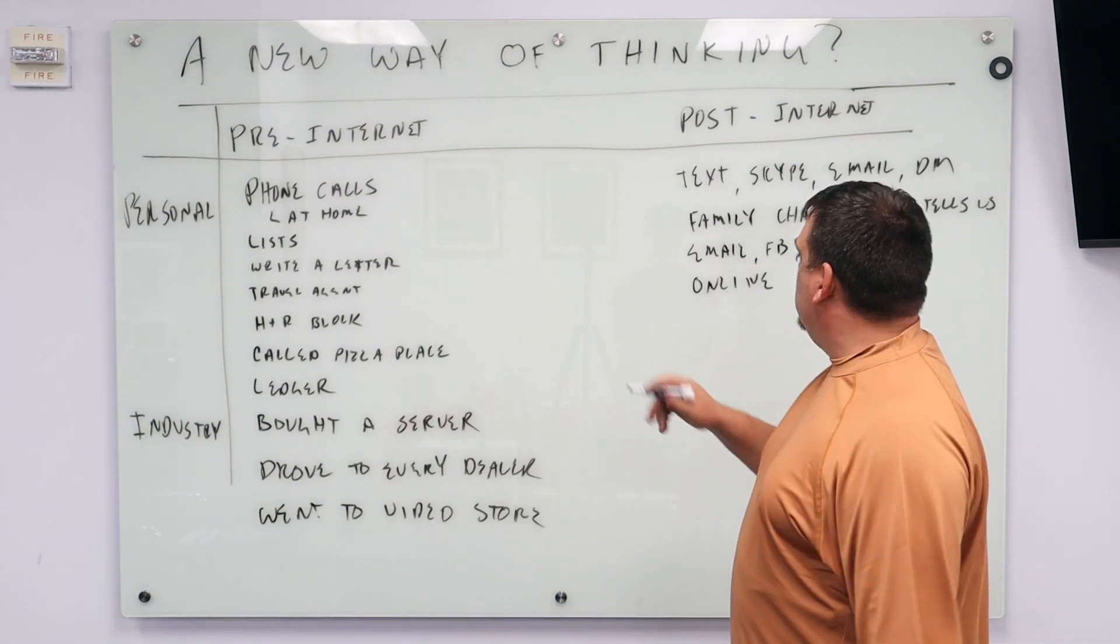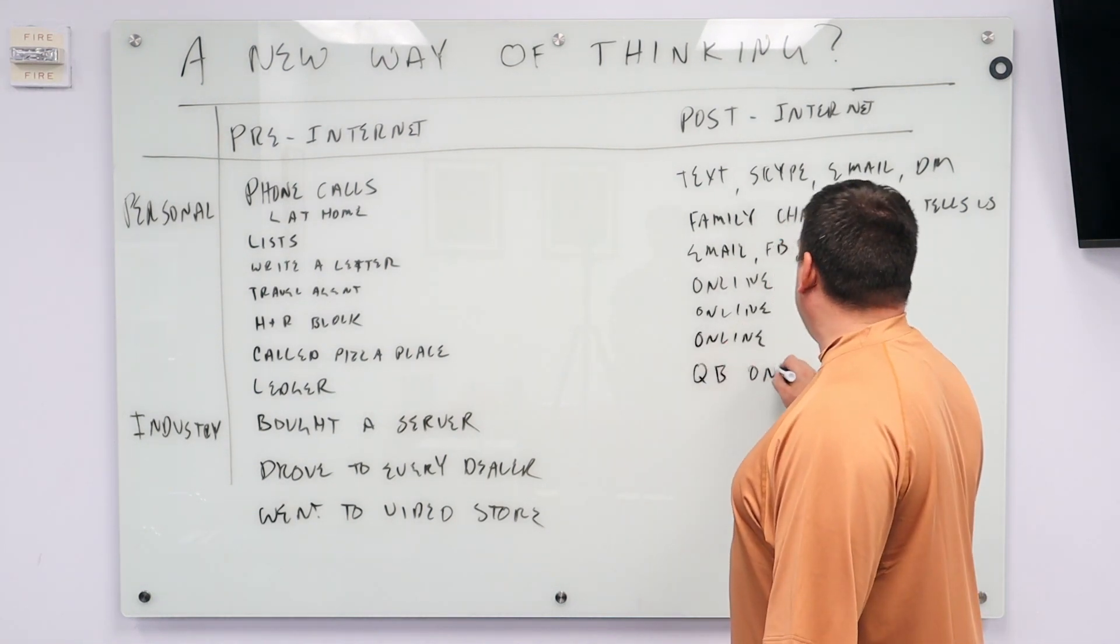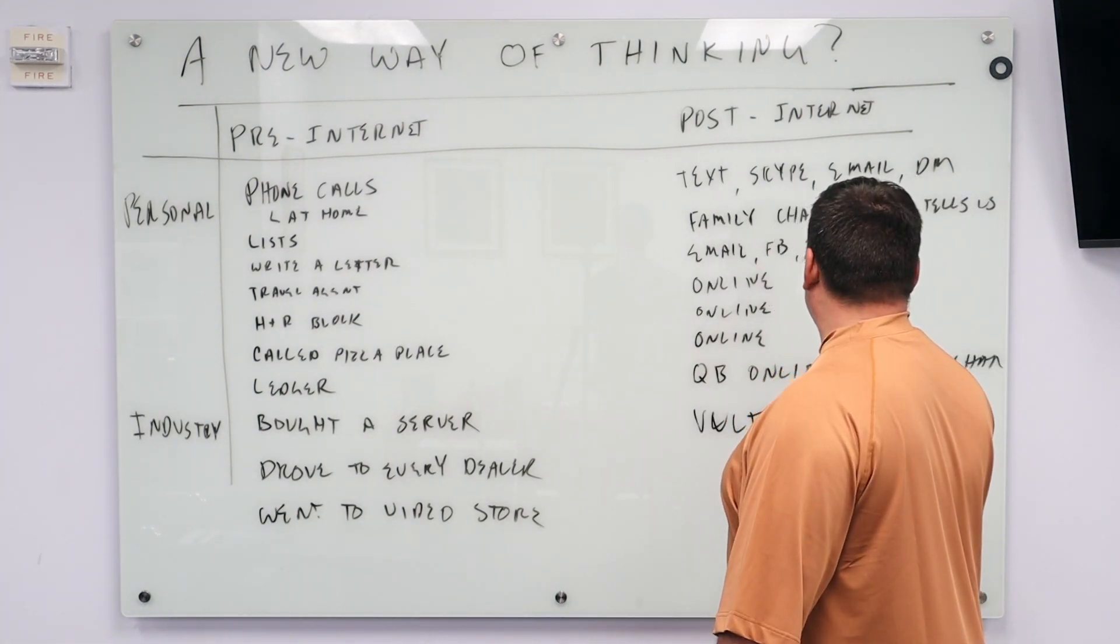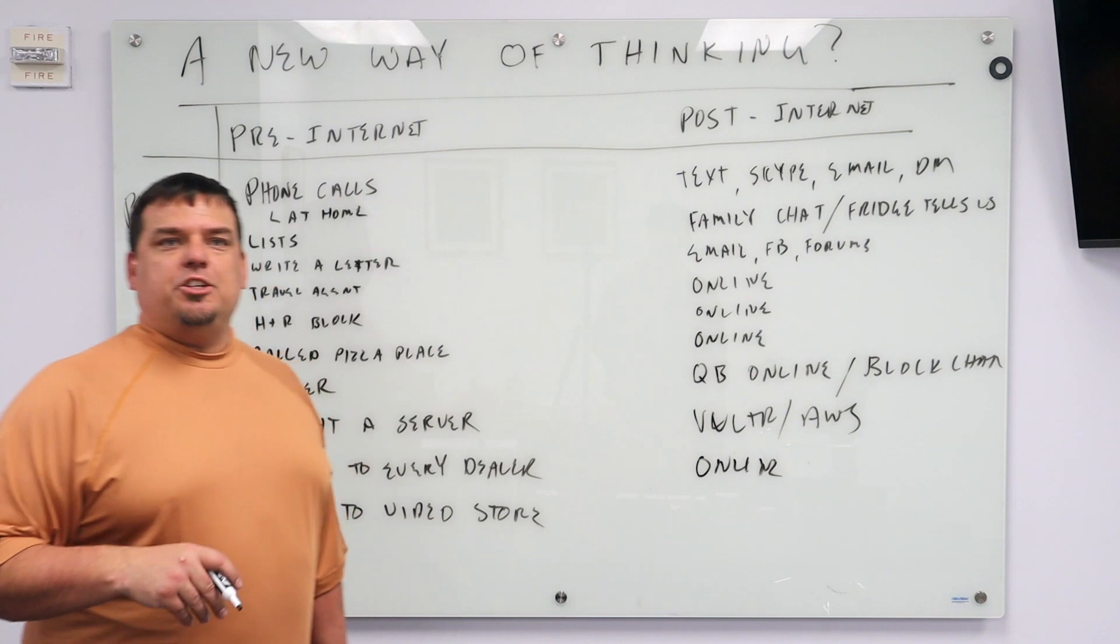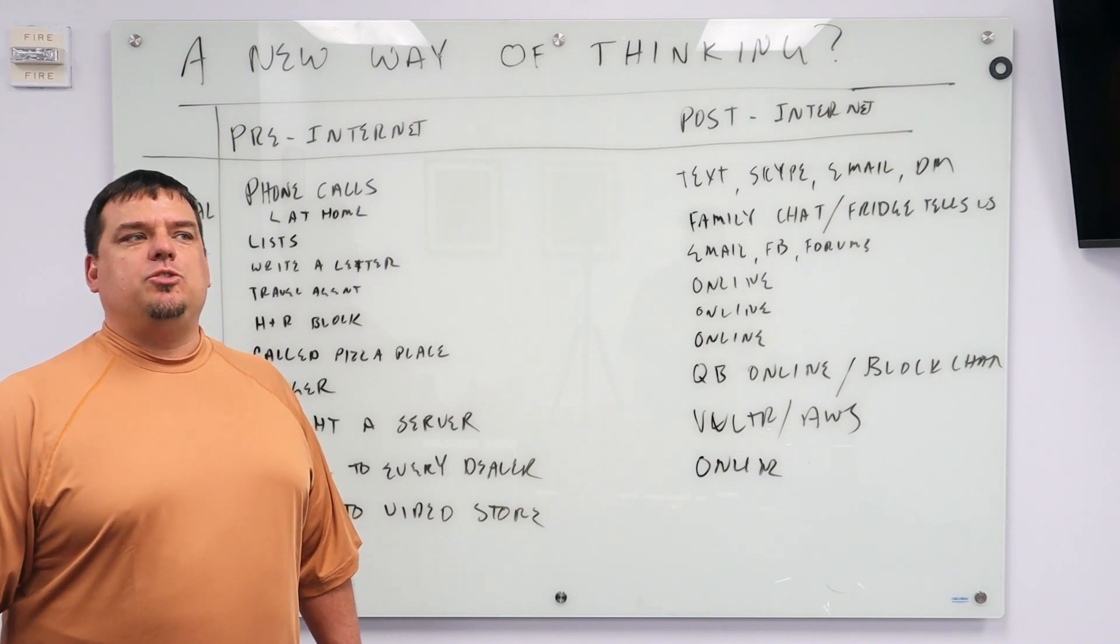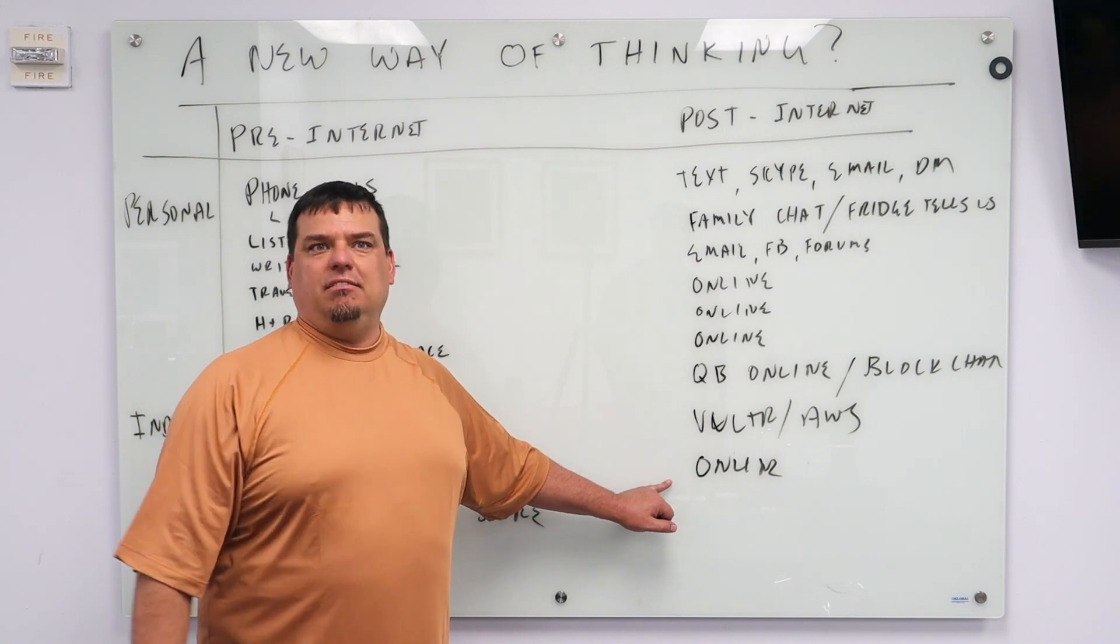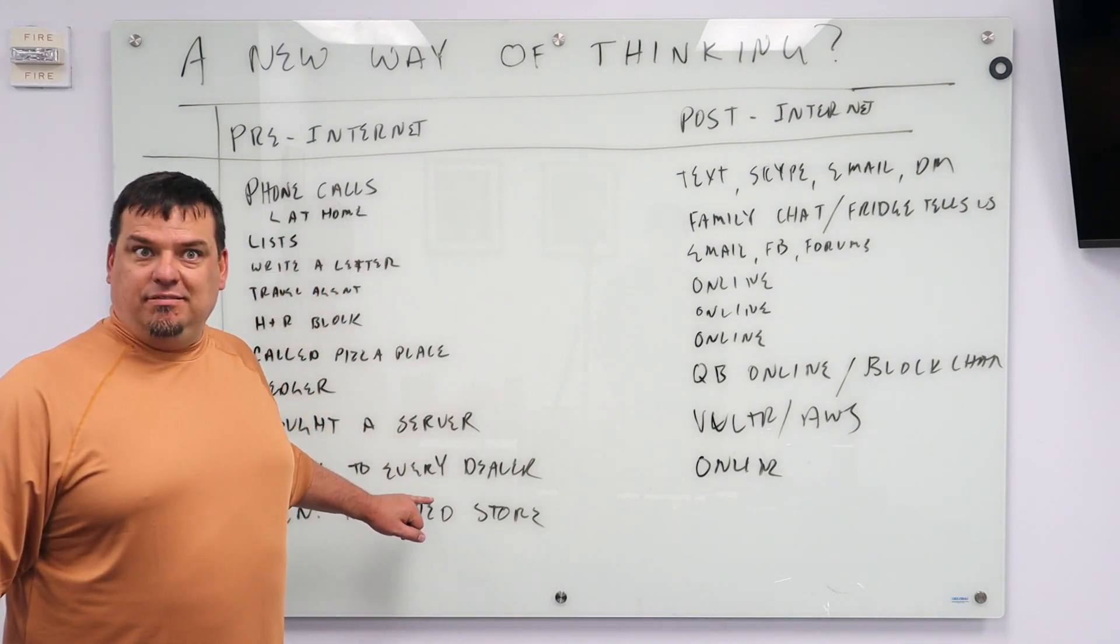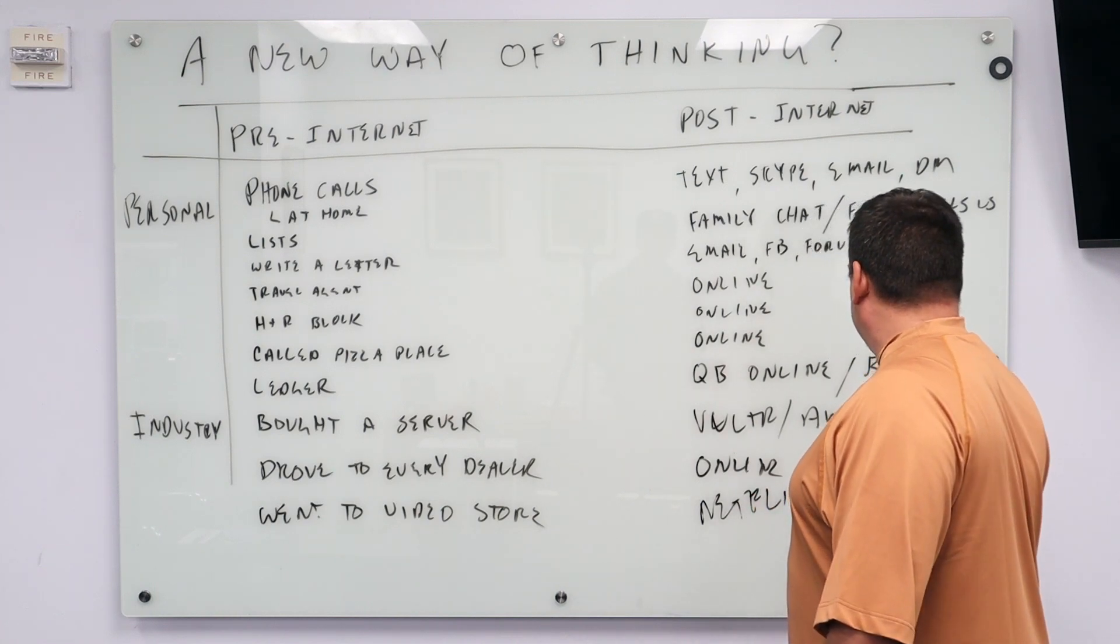How do you book travel? Do you ever talk to somebody? Who does your taxes? Online. When you order a pizza? Online. You use QuickBooks? Online. Blockchain. When you buy a server? Go to Vulture, go to AWS, spin one up in five minutes. How do you buy a car? Research online. I just put a deposit down on that new electric pickup truck that was a Kickstarter. It comes out in 2020 and I never spoke to a single person. When I put the deposit down on my Tesla, same thing. Why is Tesla even in business? Because the major dealers no longer control all the information. How do we entertain ourselves? Netflix. YouTube.